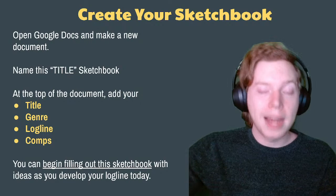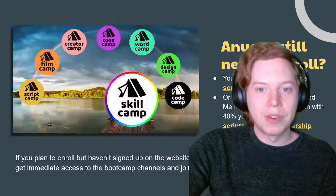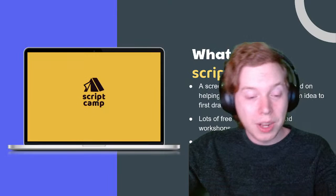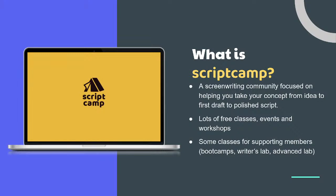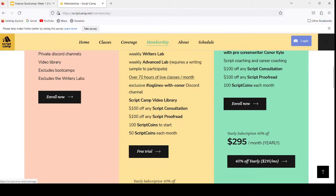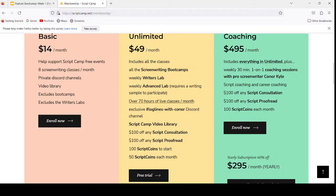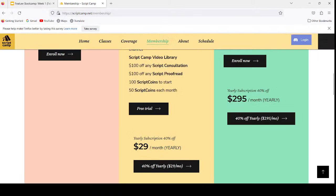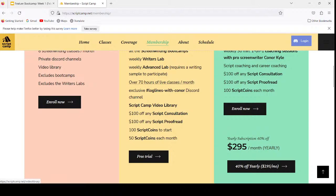Script Camp is a screenwriting community focused on taking you from your idea to a finished, more polished script, with lots of free classes, events, and workshops. Some classes are for our supporting members — the later classes in the boot camps after this one will require membership. Go to scriptcamp.net/membership to sign up for a free trial, which gives you two weeks of access to everything we do — over a hundred hours of different events and classes per month. We also have a server focused on novel writing with a brand new novel writing boot camp starting tomorrow. Sign up for yearly to get 40% off and access to every event, workshop, and class across all of our servers.